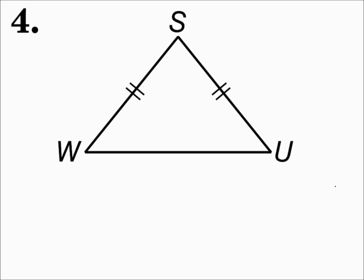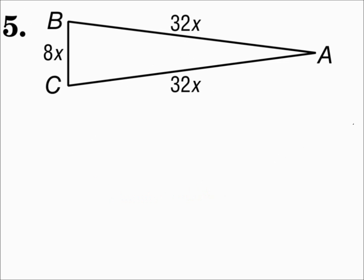Number four — this one has two congruent sides, so it's isosceles. Number five also has two congruent sides: the 32x and the 32x. Even though we don't know what x is, we do know that those values are the same. This one is isosceles.